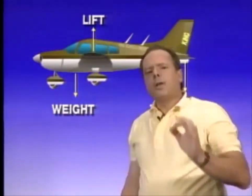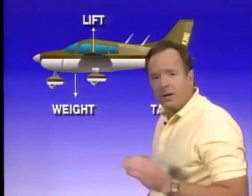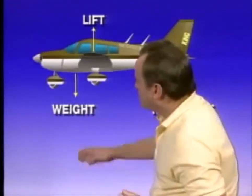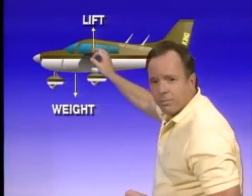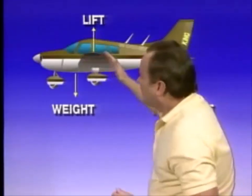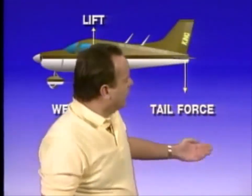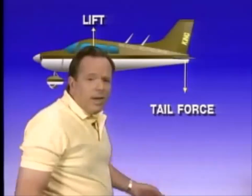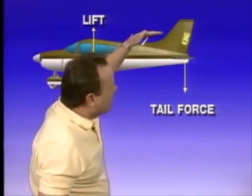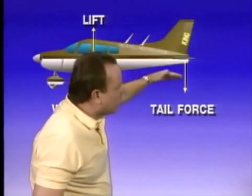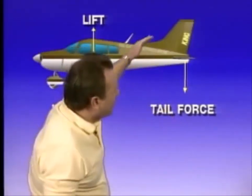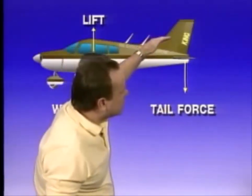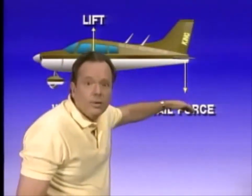Most airplanes, particularly little airplanes, are designed so that the center of gravity is ahead of the center of pressure. And so the airplane would nose down, except for one thing: there is an aerodynamic down force on the tail. In most little airplanes, the tail is actually trying to fly down.